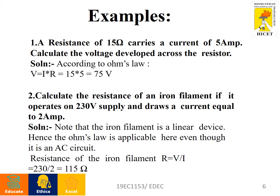According to Ohm's Law, I = V / R, so we can reframe it as V = I × R. Here we are calculating the voltage across the resistor. V = I × R; I is 5 amperes and R is 15 ohms. So 15 × 5 = 75 volts. The unit of voltage is volts.